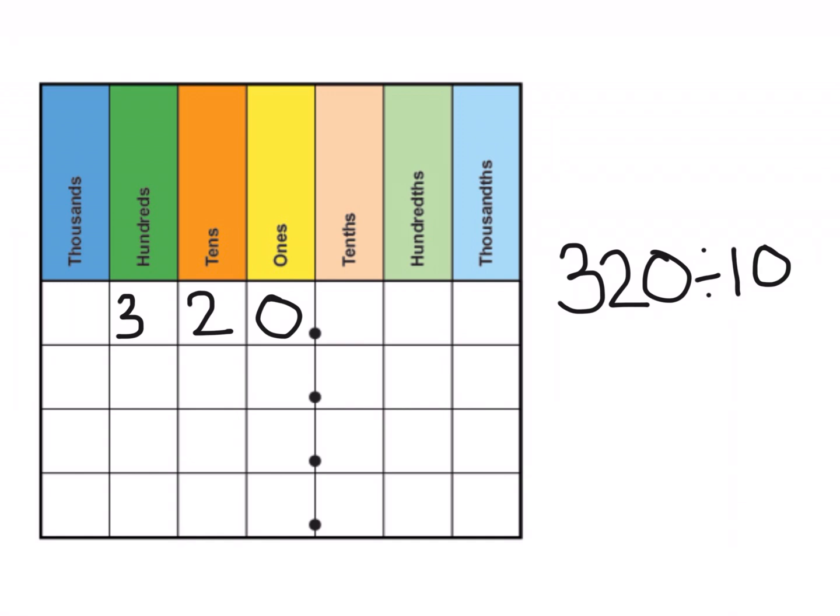To divide by 10, I just have to move everything once to the right. I'm going to move the ones to there, the tens to there, and the 3 to here. Once I've moved it, the 3 comes into the tens column, the 2 comes into the ones, and then the 0 is here. So my answer would be 32.